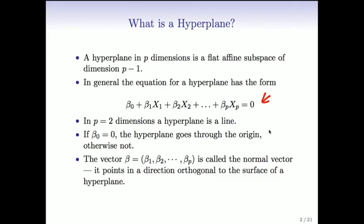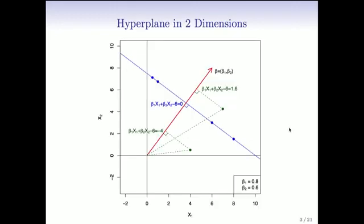And the vector beta 1 through beta p, excluding beta zero, is called the normal vector. It points in a direction orthogonal to the surface of the hyperplane. So, let's have a look at the picture and see what we mean by that.